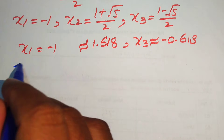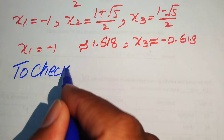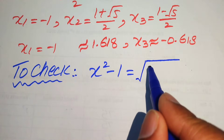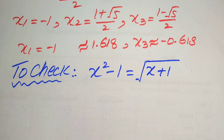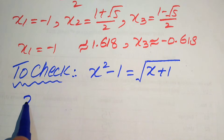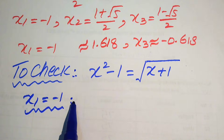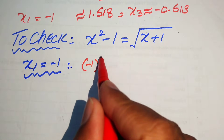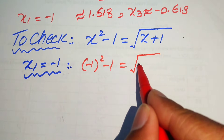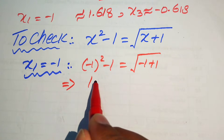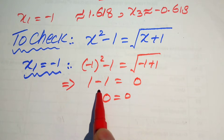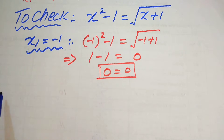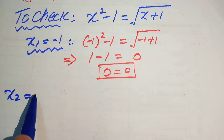We now check how many roots satisfy the original equation x squared minus 1 equals the square root of x plus 1. Substituting the first root x1 equals minus 1: minus 1 squared minus 1 equals the square root of minus 1 plus 1, which gives 1 minus 1 equals the square root of 0, so 0 equals 0. Therefore x1 equals minus 1 satisfies the given equation.